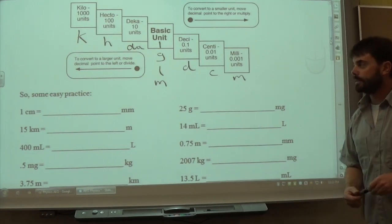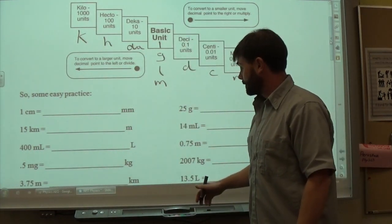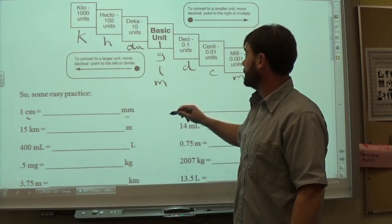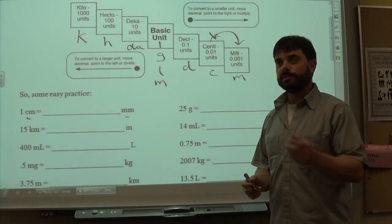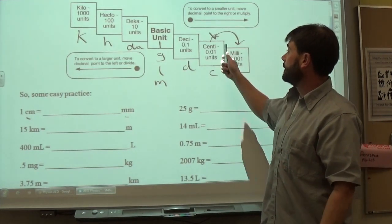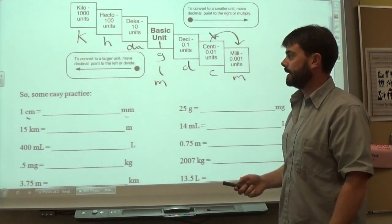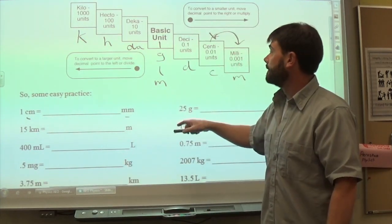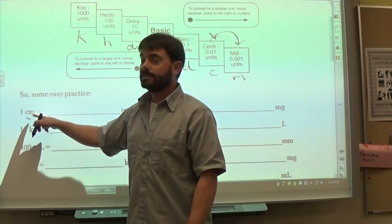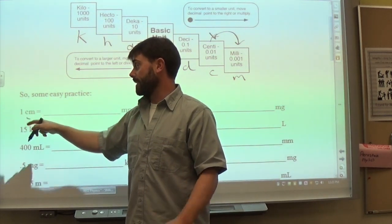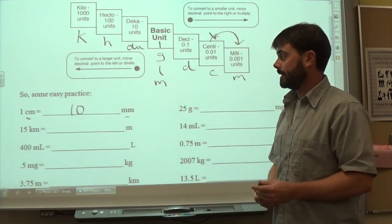Let's start with the staircase method. The first practice problem converts 1 centimeter to millimeters. The trick is to look at where you start and where you finish. Starting at centi and going to milli, you move one step to the right. Moving the decimal to the right is the same as multiplying by 10. Starting with 1.0, moving the decimal right one place, you add a zero to get 10 millimeters.